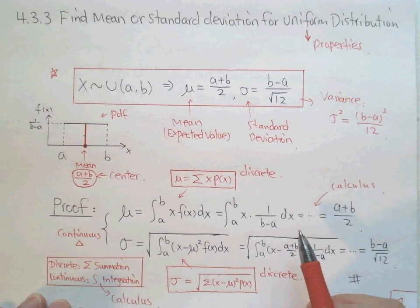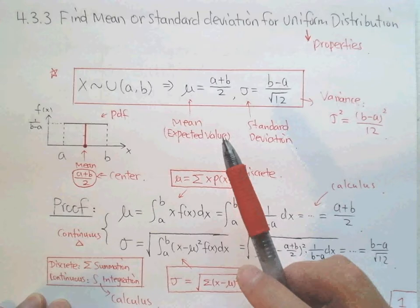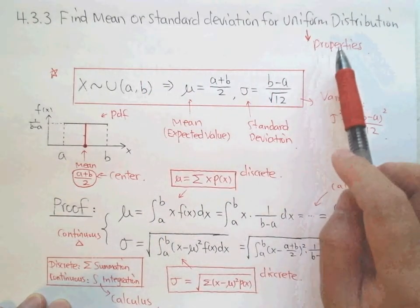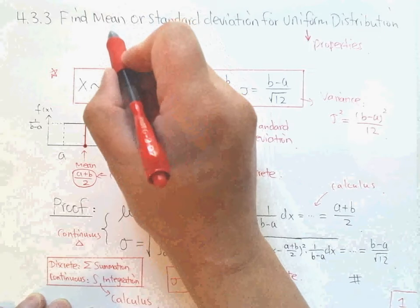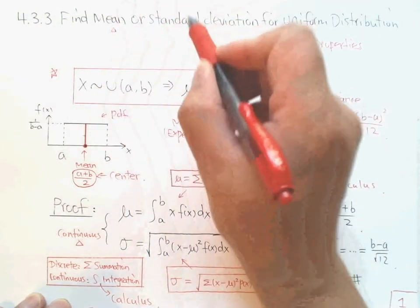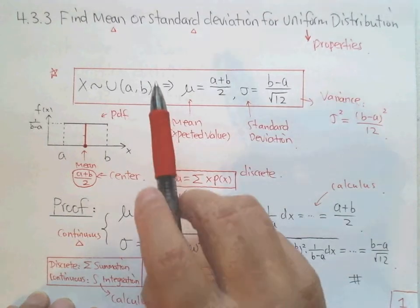Hello, this is Paul from Forsyth Tech. In this lecture, we're going to deal with some properties for uniform distribution, and the measures: the mean, standard deviation, and of course the variance.